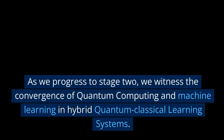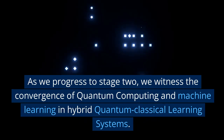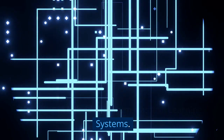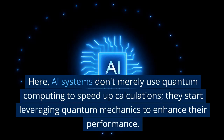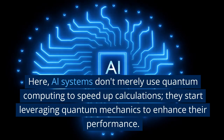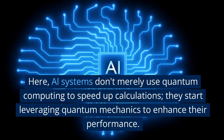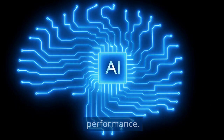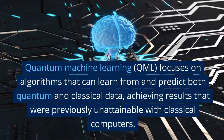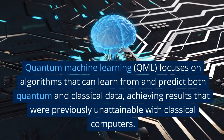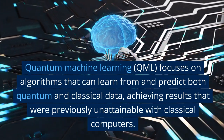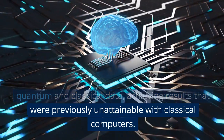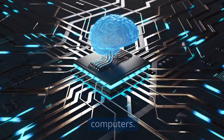As we progress to Stage 2, we witness the convergence of quantum computing and machine learning in hybrid quantum-classical learning systems. Here, AI systems don't merely use quantum computing to speed up calculations — they start leveraging quantum mechanics to enhance their performance. Quantum machine learning, QML, focuses on algorithms that can learn from and predict both quantum and classical data, achieving results previously unattainable with classical computers.